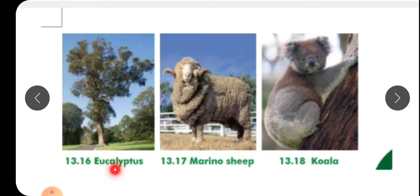That is nilgiri and in English it's called eucalyptus. This is merino sheep. Merino sheep is useful for making good quality of wool. Iska jo wool hota hai, iska jo chamdi hota hai, uske baal hote hai, usse bahut achhi quality ki wool and clothes bante hain.